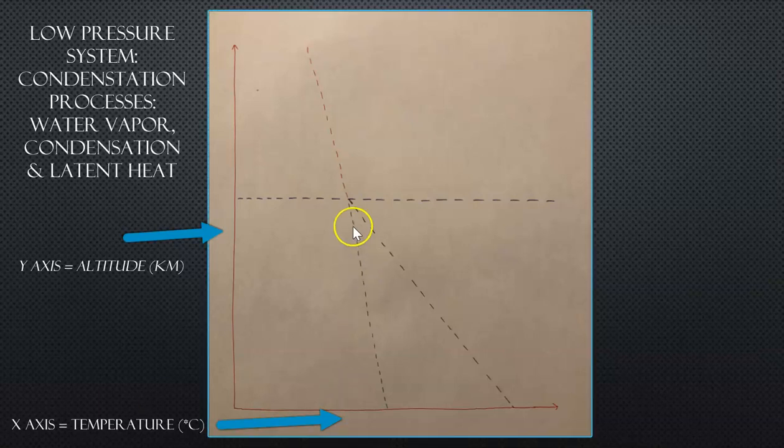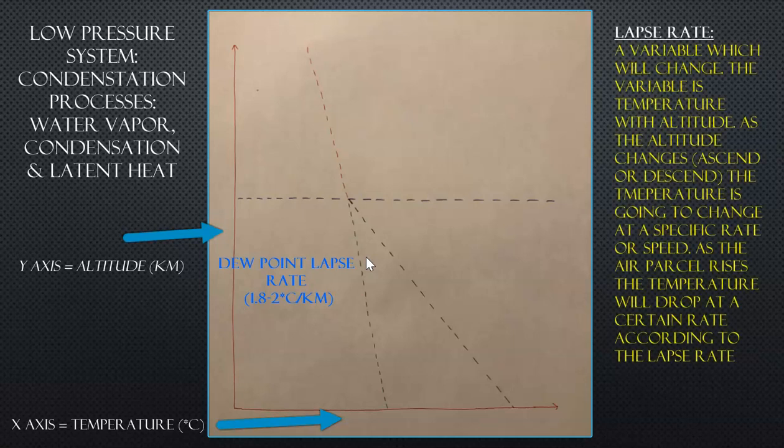Now, the green dashed line right here, this is the dew point lapse rate. It is 1.82 degrees Celsius per kilometer. So that means that as you either increase or decrease in altitude, going away from the surface or towards the surface, this lapse rate for dew point will change by 1.8 to 2 degrees for every kilometer change.